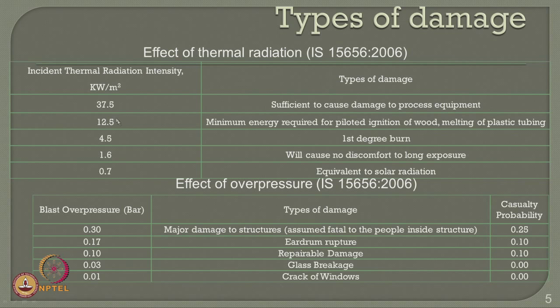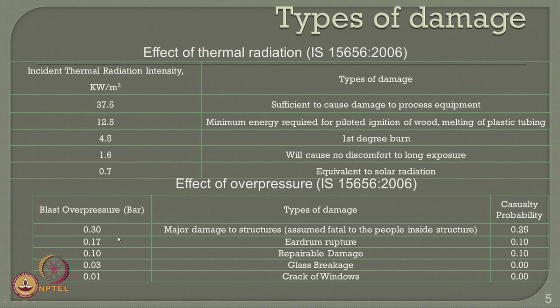If you have a very high value of radiation intensity, it can result in complete damage to process equipment, whereas very low thermal radiation intensity causes an effect equivalent to solar radiation on the plant. The second major type of damage in petrochemical industries is the effect of over pressure, generally measured in bar. Pressure varying from as low as 0.01 to as high as 0.3 bar — where 0.3 bar could cause major structural damage, while 0.01 bar can result in cracking of windows and glass breakage.